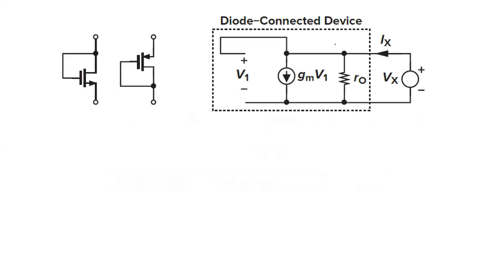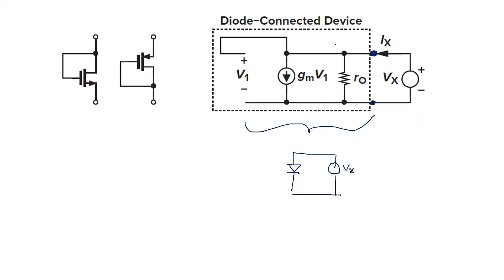What is Diode Connected Load? Simply, PMOS and NMOS where gate and drain are shorted is known as the Diode Connected Device. I designed this small signal model. Overall, we can say that if a source is applied between these two points, this internal structure is working as a diode. We can see it as a structure where Vx is applied and it is behaving like a diode. So this is the diode connected load — drain and gate are shorted.